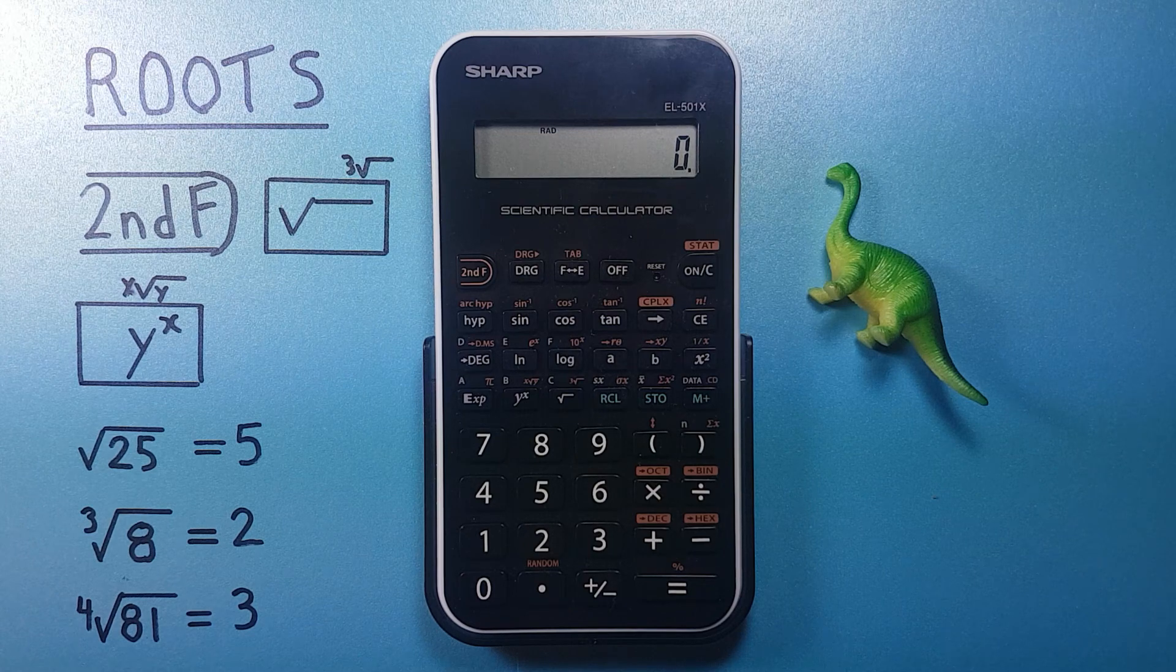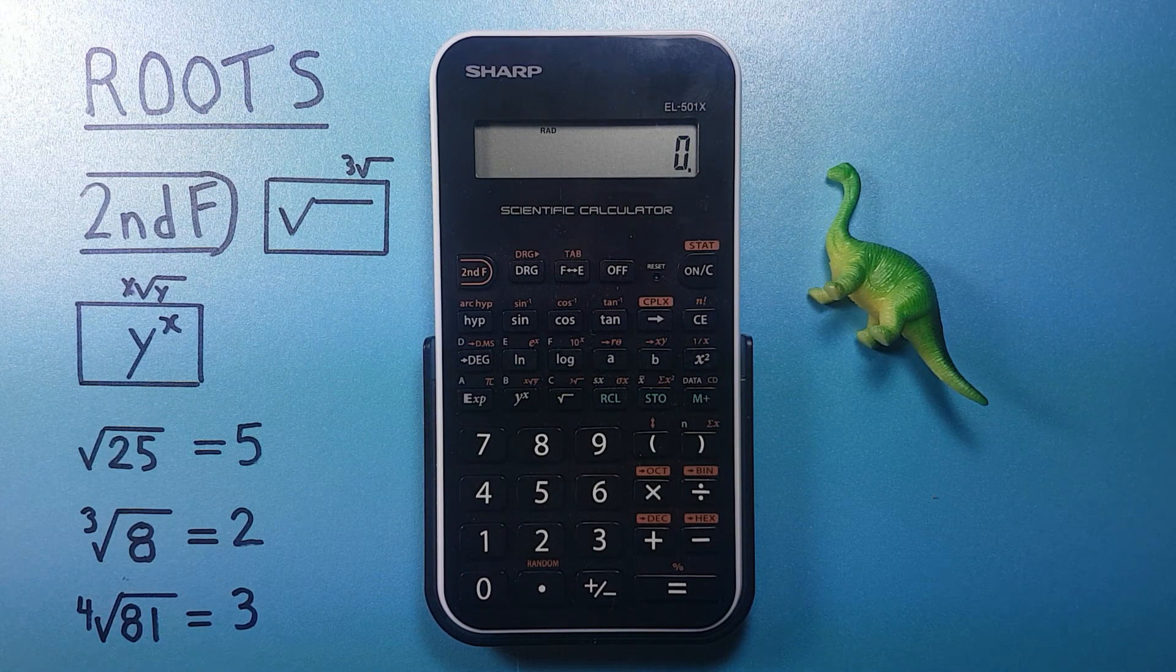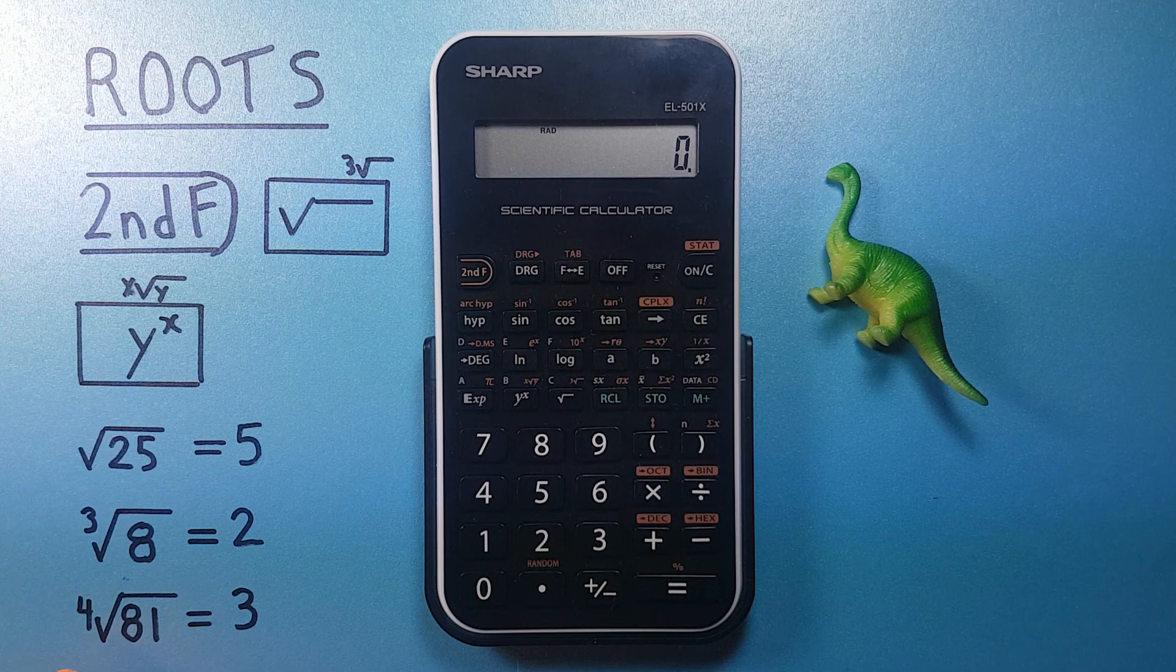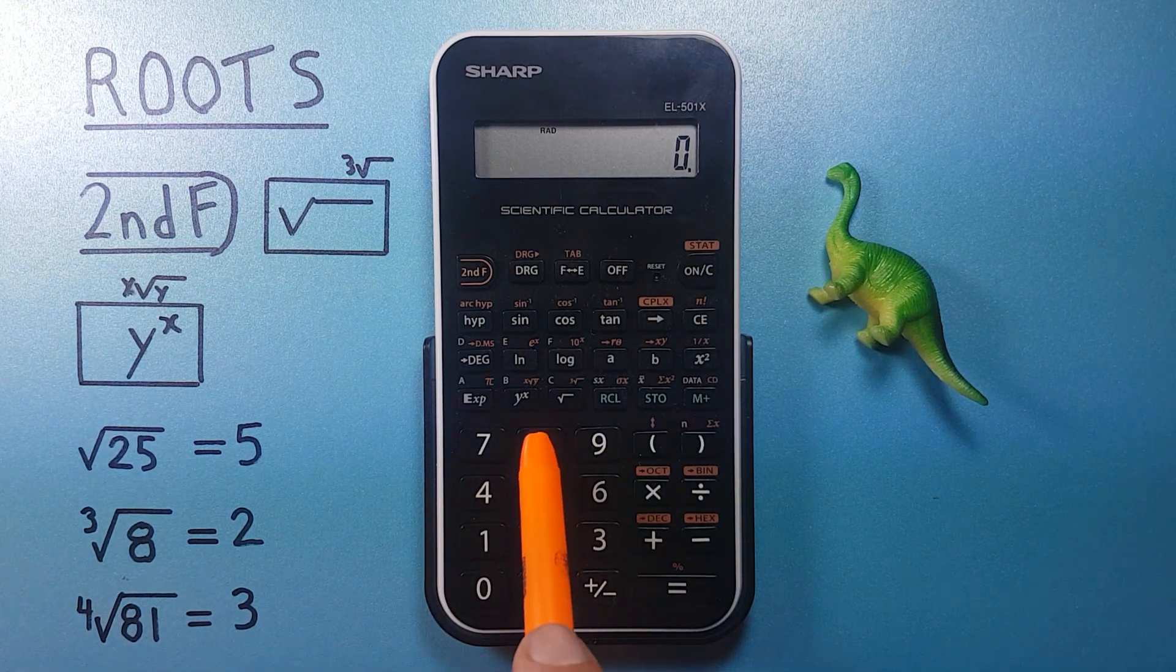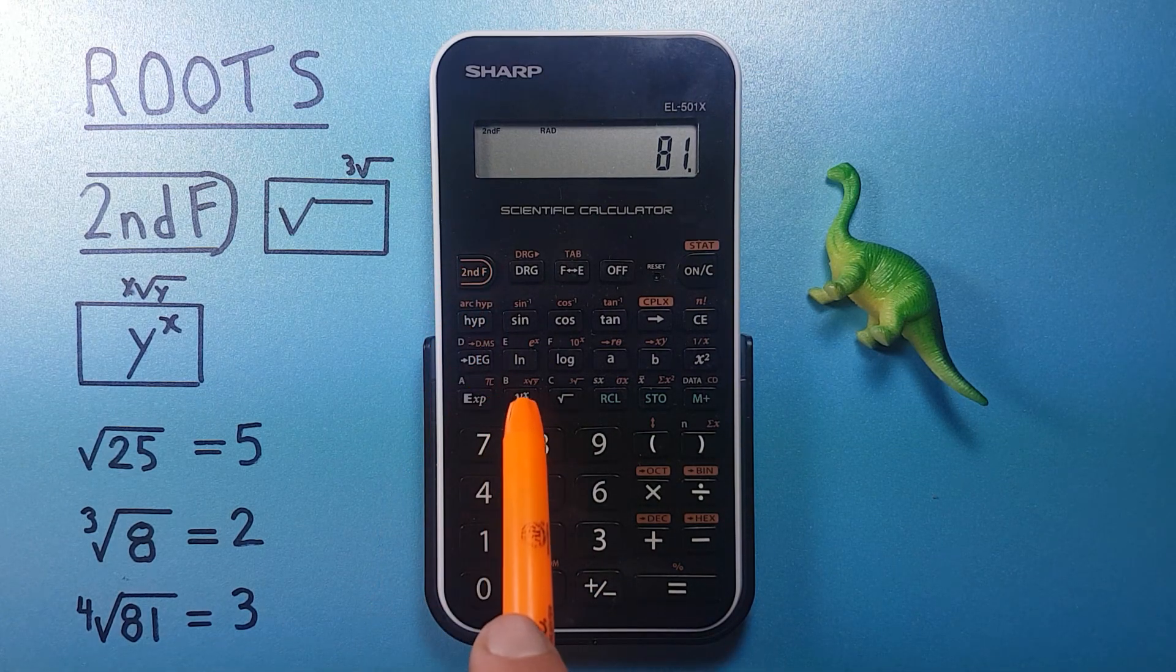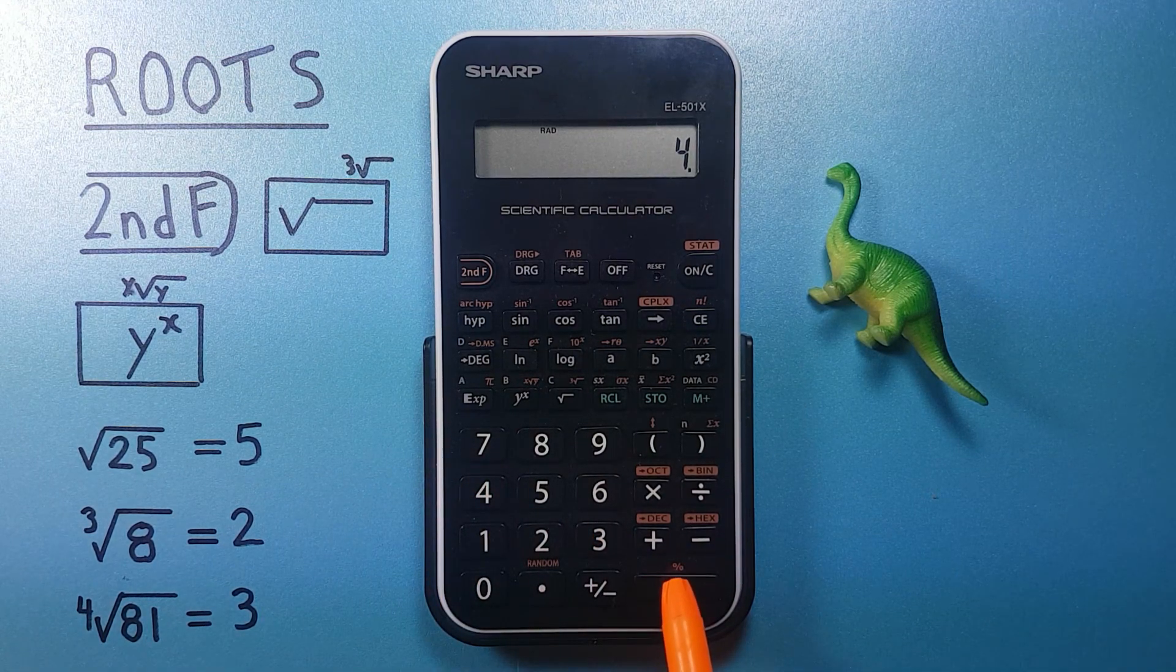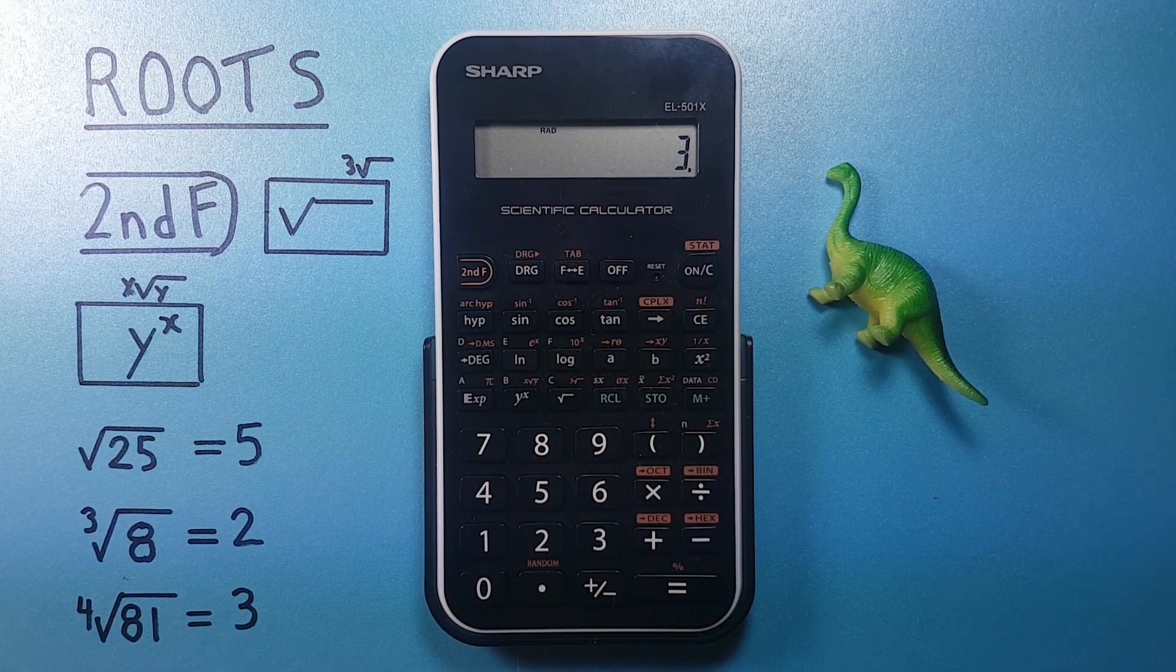Now if you want to find a root that isn't a square root or a cube root, what we need to use is the second function of the y to the x key. So for example, if we want to find the fourth root of 81, we enter 81, and then the second function y to the x key. Since we're finding the fourth root, we then press 4 and press equals. This gives us 3, which we know is correct.